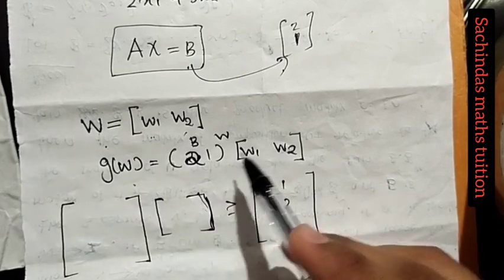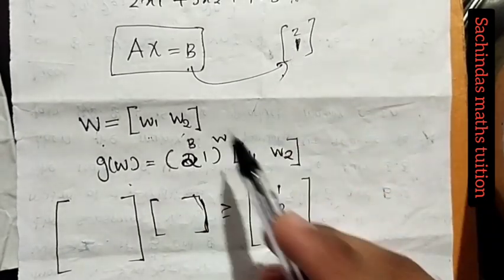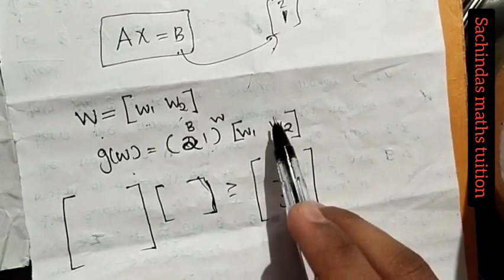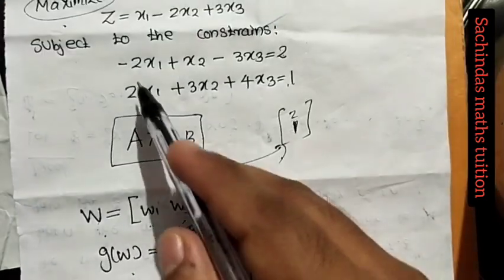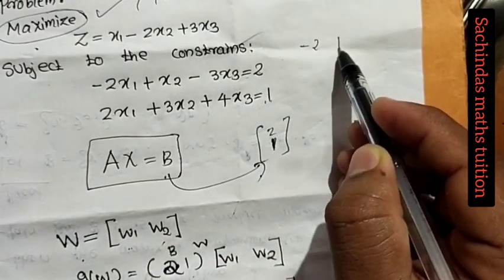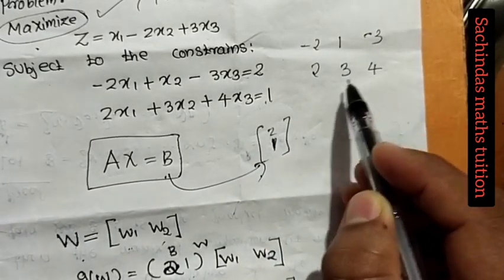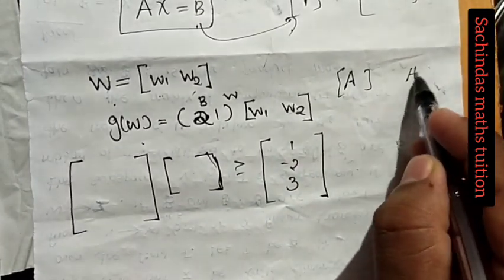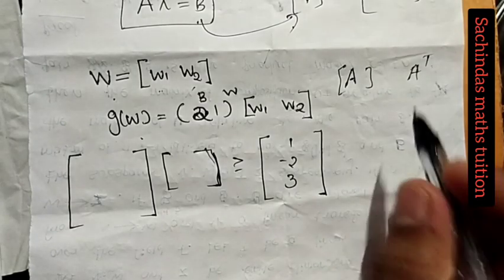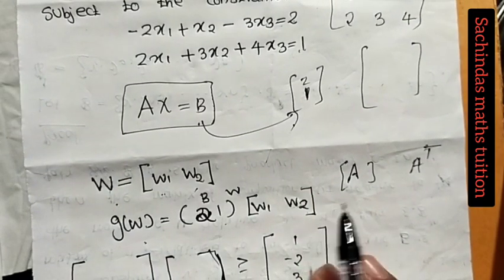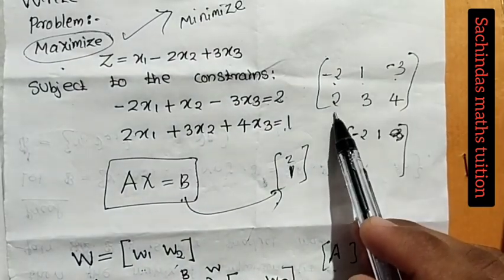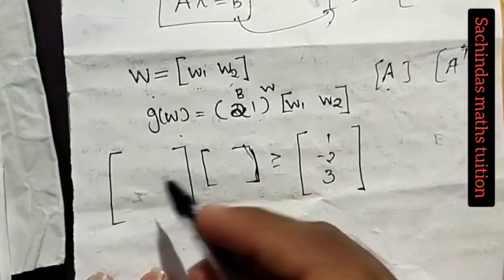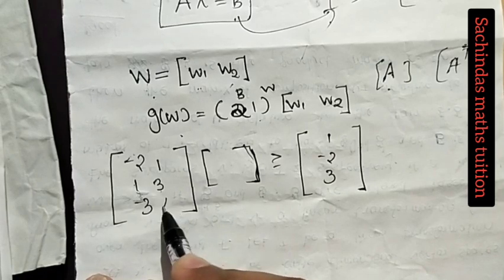Then g is equal to b into w. We separate it into matrix form. 1 equals its core: 2, 1 times W1, W2. We will write a row: minus 2, 1, minus 3 and 2, 3, 4. What is this? Transpose. If we have a matrix, we will do the transpose. The matrix minus 2, 1, minus 3 and 2, 3, 4 — we write this row as its transpose.